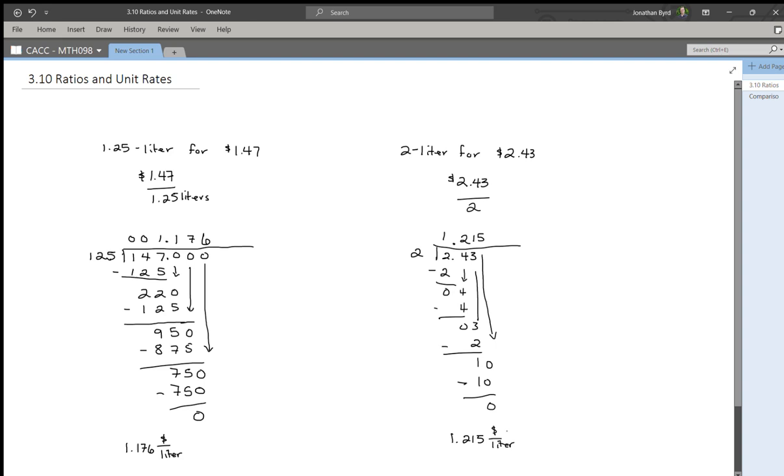Okay. So then now I can compare and say, well, the better deal, if you will, is to buy the 1.25 liter because it only costs $1.176 per liter. Whereas the 2 liter, even though it has more, costs more per unit than its smaller counterpart. And that's a practical application of unit rates.